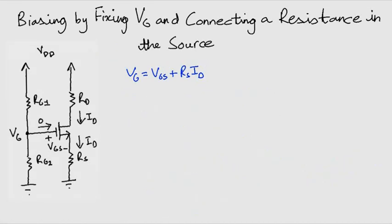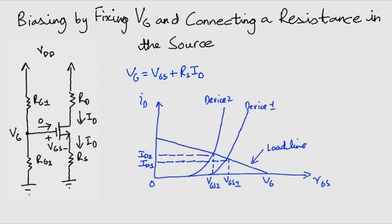So what happens when we employ two MOSFETs from the same batch at two different instances of time on the same circuit? We have noticed that in the case of fixing VGS, the values of current were very different from each other. So what happens in this case? Now in this figure, the two devices are compared, but we also have a load line as a result of the constraint imposed by this equation.